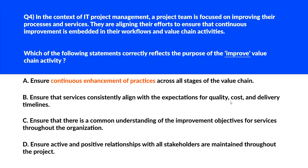While option B is important, it focuses more on the outcome of services rather than the continuous improvement process itself — incorrect. Option C is about ensuring a common understanding of improvement objectives for services throughout the organization. This refers more to communication and alignment, which is important but does not capture the essence of the 'improve' value chain activity, which is about practical improvements to services. We'll eliminate this.